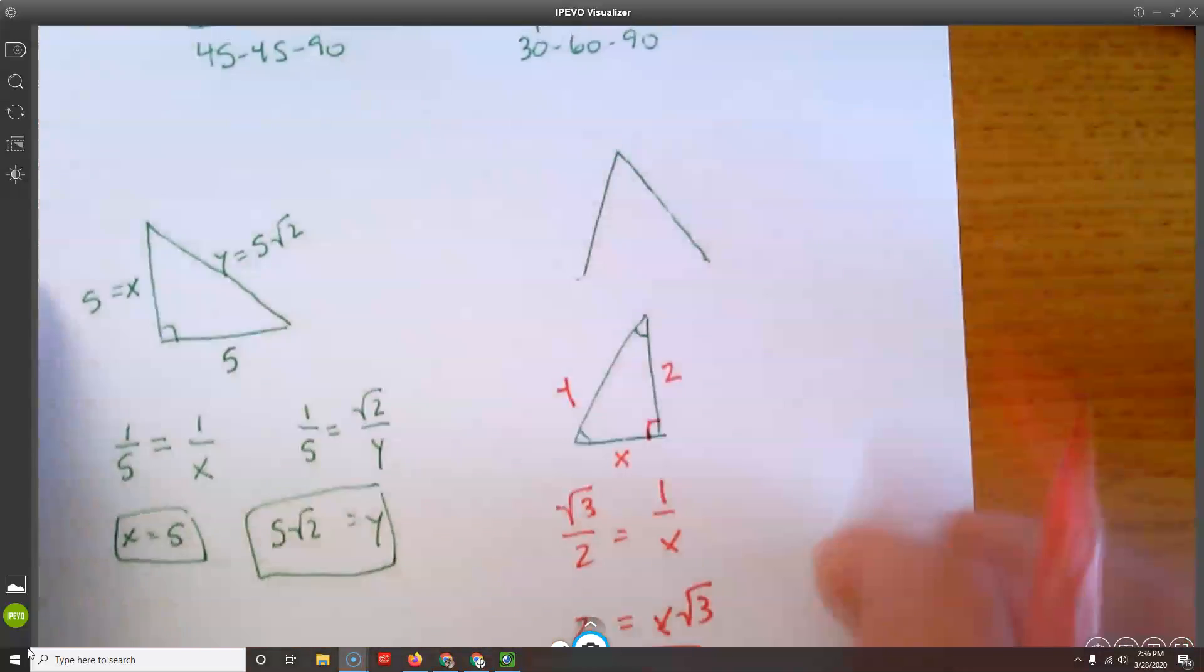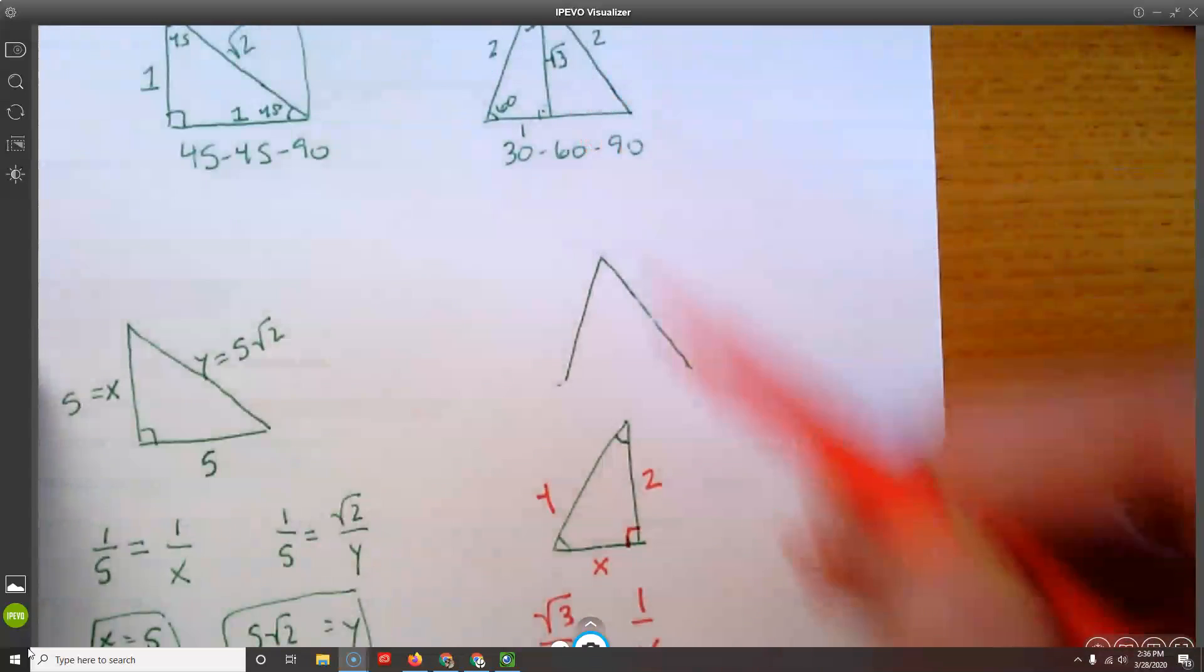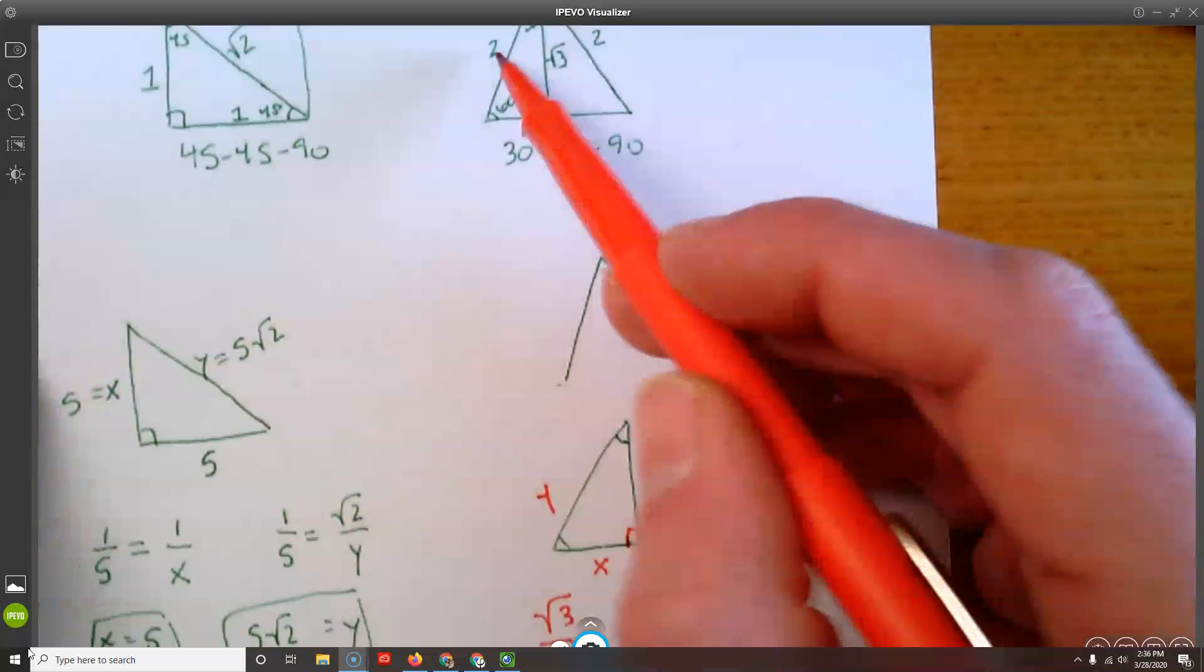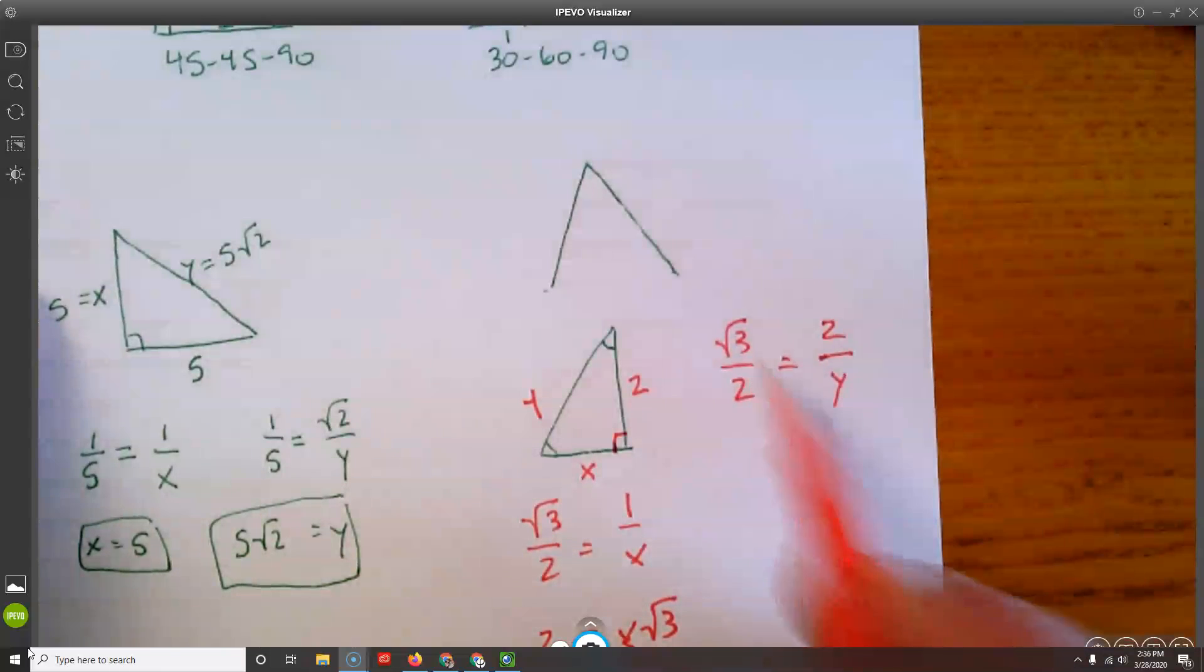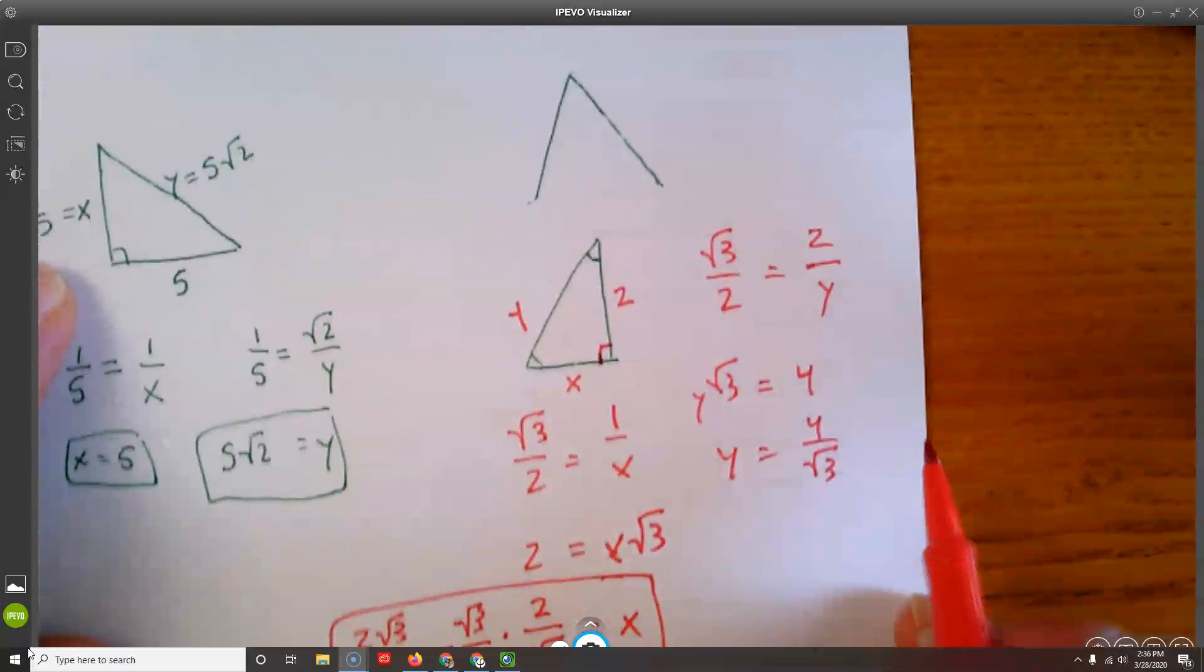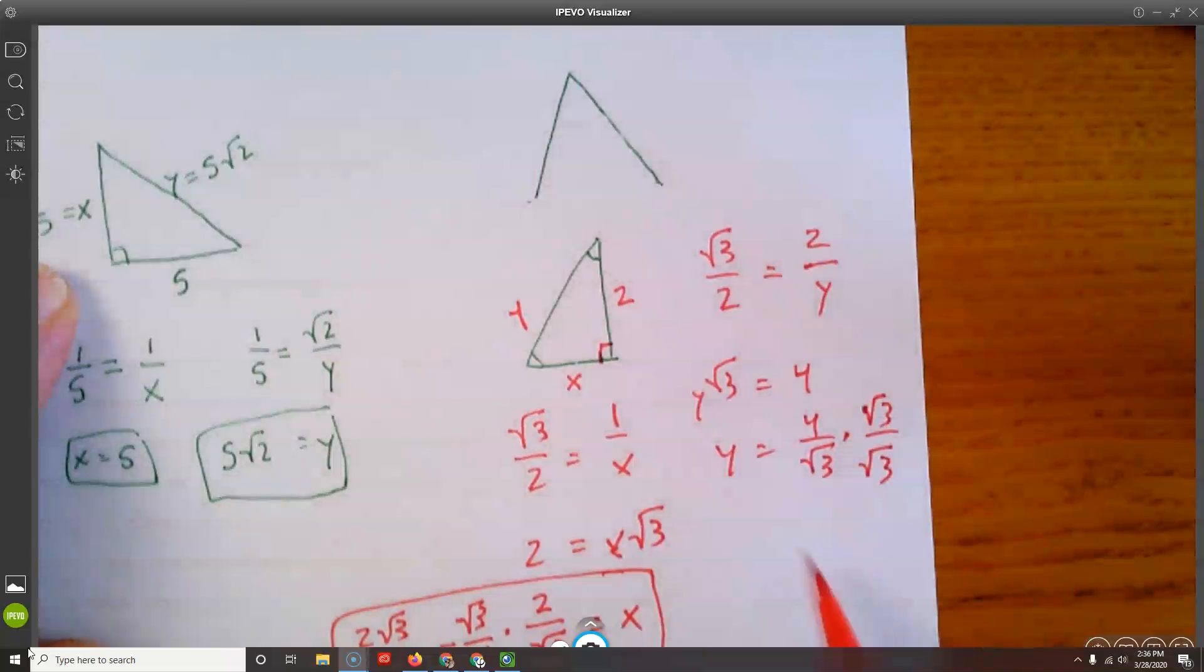So on the other hand, I'd have y. Well, I say square root of 3 to 2 is the same as 2 to y. So let's see, then I get square root of 3 times y equals 4. And then we'll divide, 4 over square root of 3. We don't want to leave it that way. So we multiply it times square root of 3 over square root of 3. And we get y equals 4 times square root of 3 over 2.